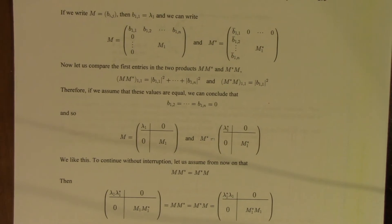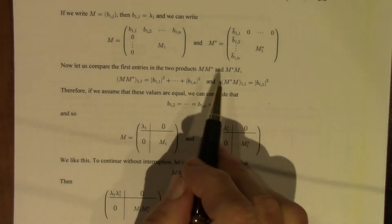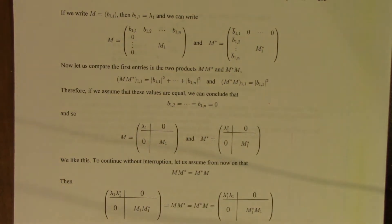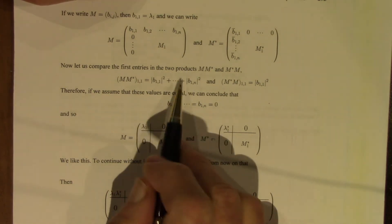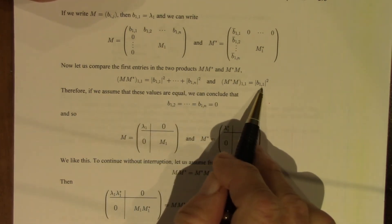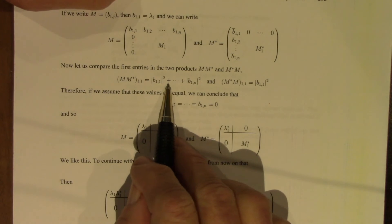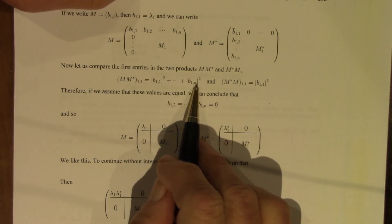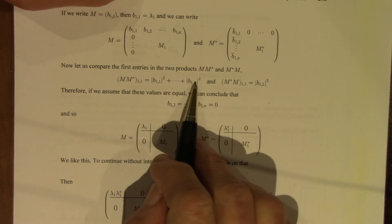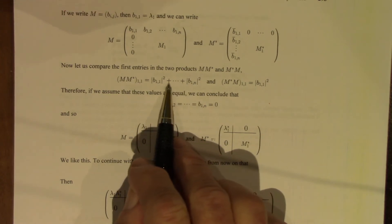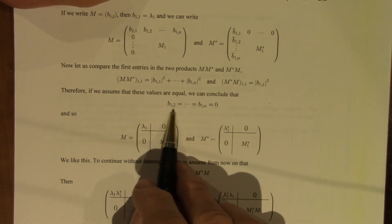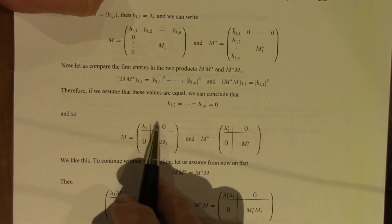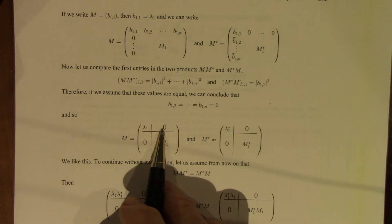What happens if these two products are equal? If these are equal, then this sum is equal to this, and so all these other terms must be zero, because we're dealing with non-negative numbers here. So all the other B's are zero — B_12 through B_1N is zero — and this is now what M looks like.